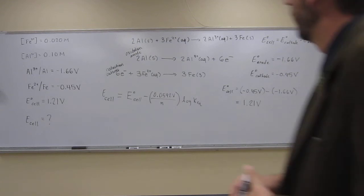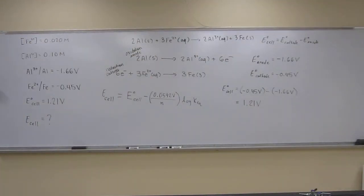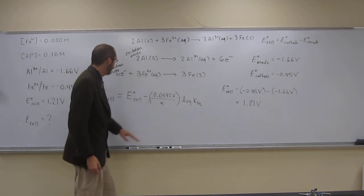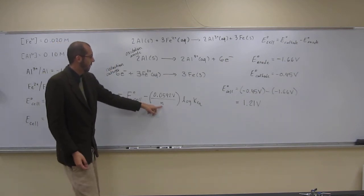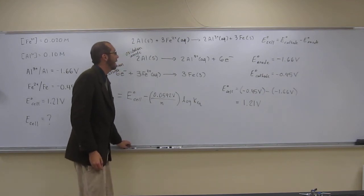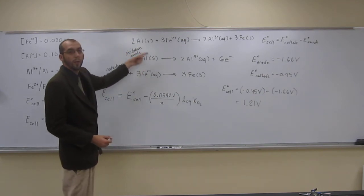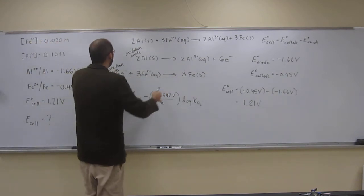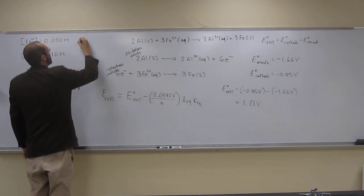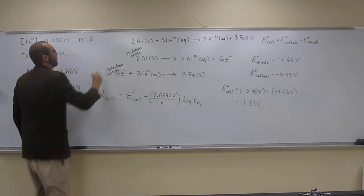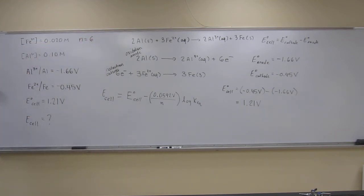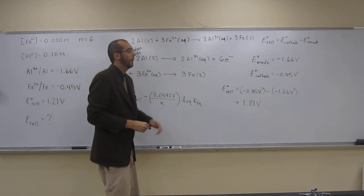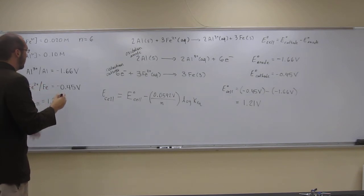So where does that leave us? Well, that means if we're going to use this equation to solve for this, we've got this. Well, what is N? Where does that come from? Well, that comes from the number of electrons that have been transferred. So if we see 6 electrons, 6 electrons, that means that N equals 6. The other thing we hopefully see is that we don't have KEQ yet, so we need to figure what is KEQ.